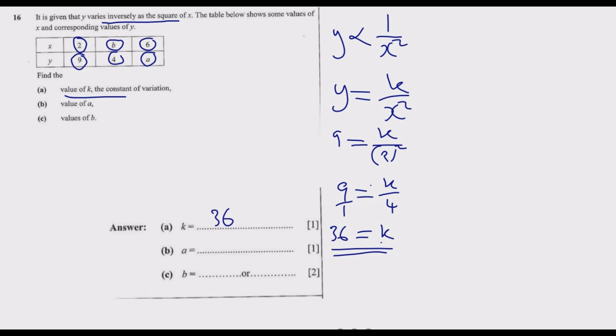Now we need to find the value of a. Having found K, the relationship becomes Y is equal to 36 over X squared. For a, we're looking for Y given that X is equal to 6. So Y is equal to 36 over 6 squared. 6 times 6 is 36, so 36 over 36 equals 1. Therefore, the value of a is 1.